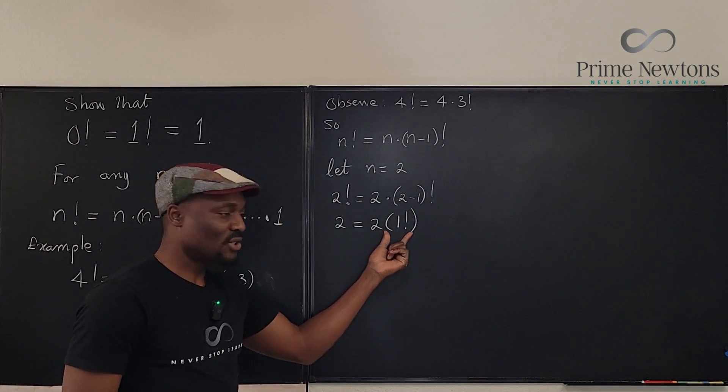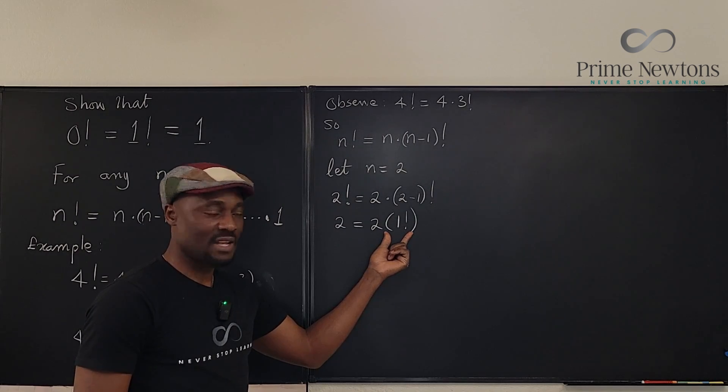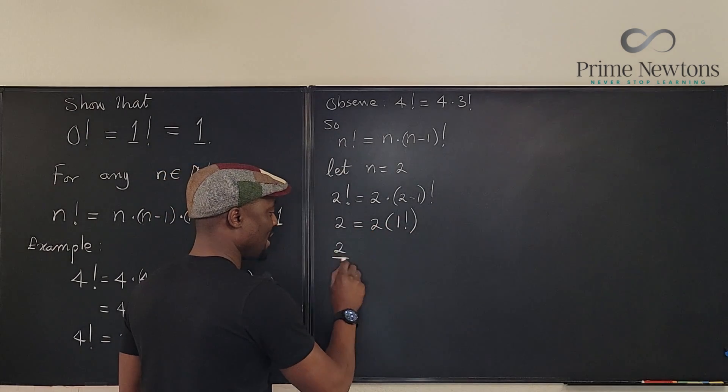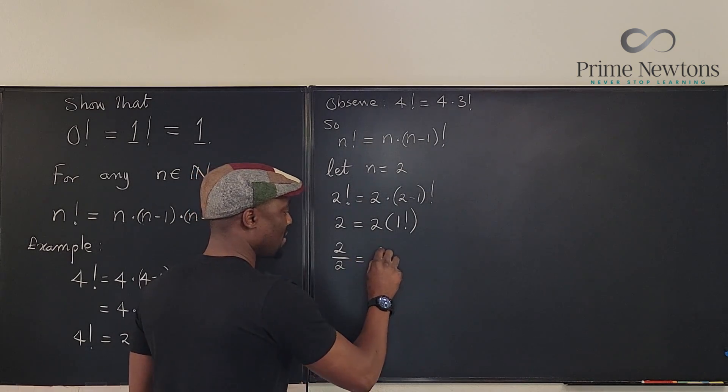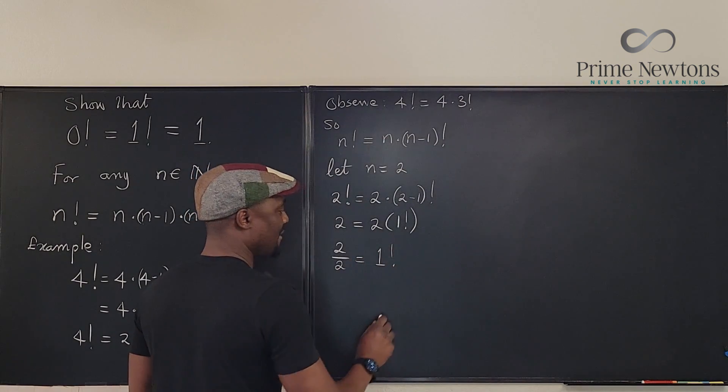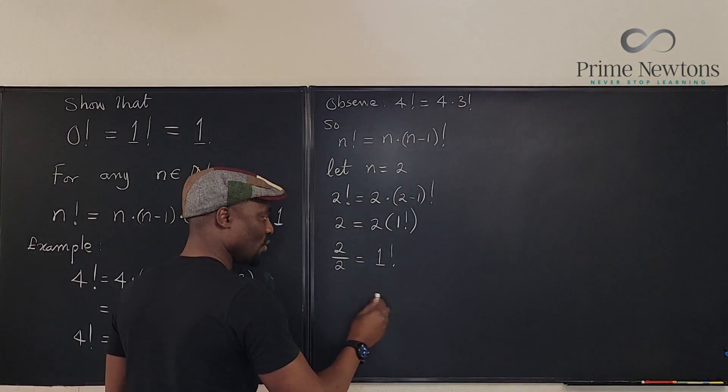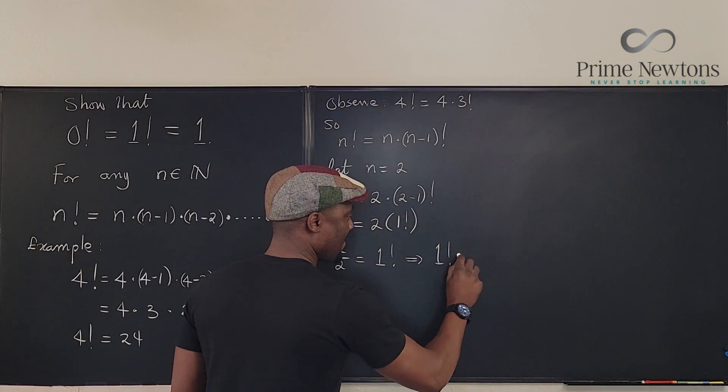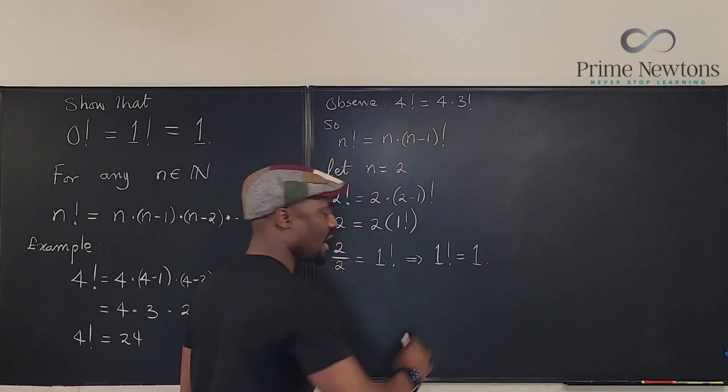So now can we isolate 1 factorial? What do we get as our answer? Well, we divide both sides by 2. If you divide 2 by 2, you're going to get your 1 factorial. And what's that? It's equal to 1. So this implies that 1 factorial is equal to 1, and we're done.